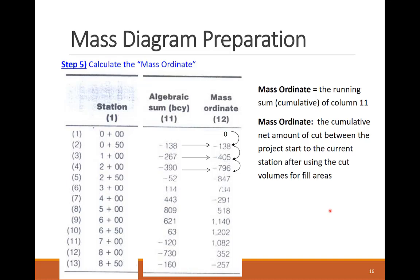By this, the mass ordinate will give us a good idea about the cut-fill balance from the beginning of the project to any point along its length. If the mass ordinate is negative, this means that there is more fill than cut up to this point of the project.